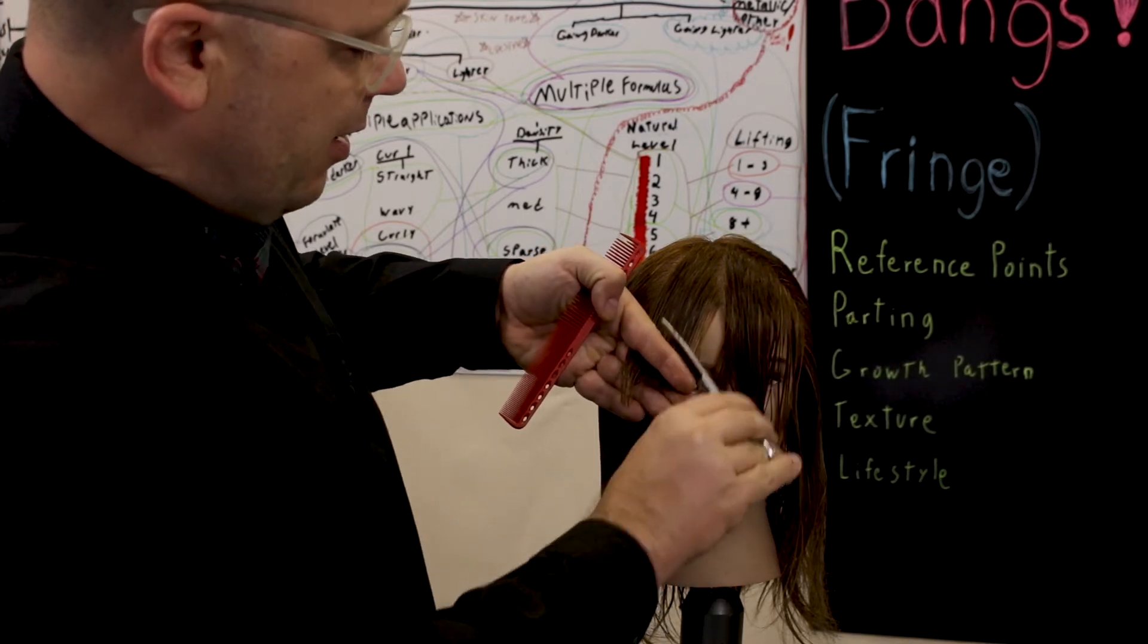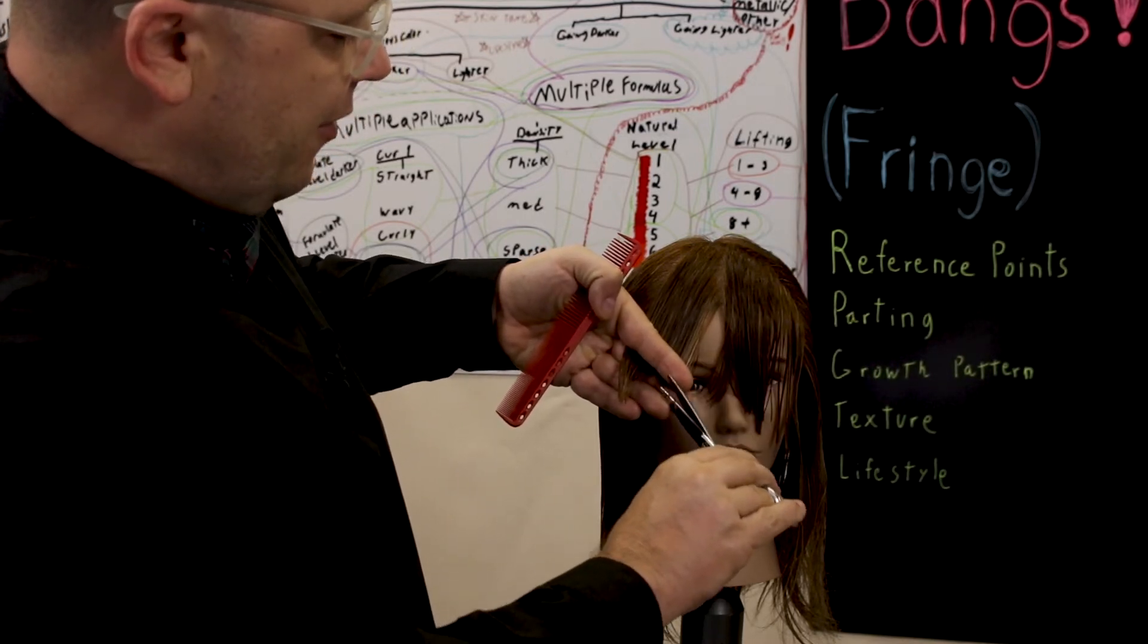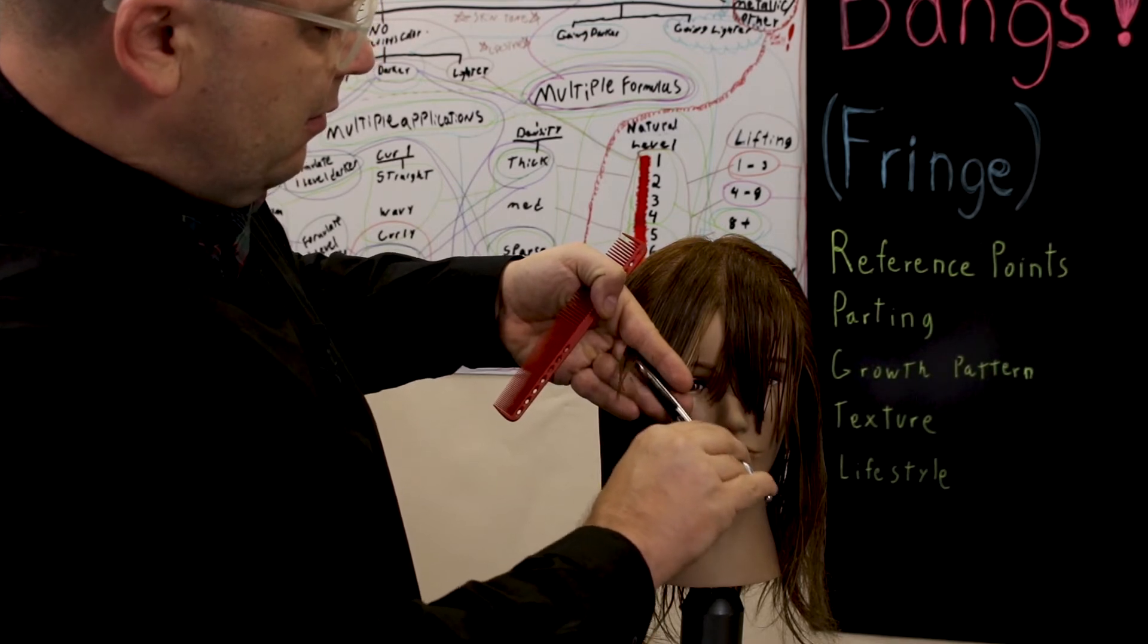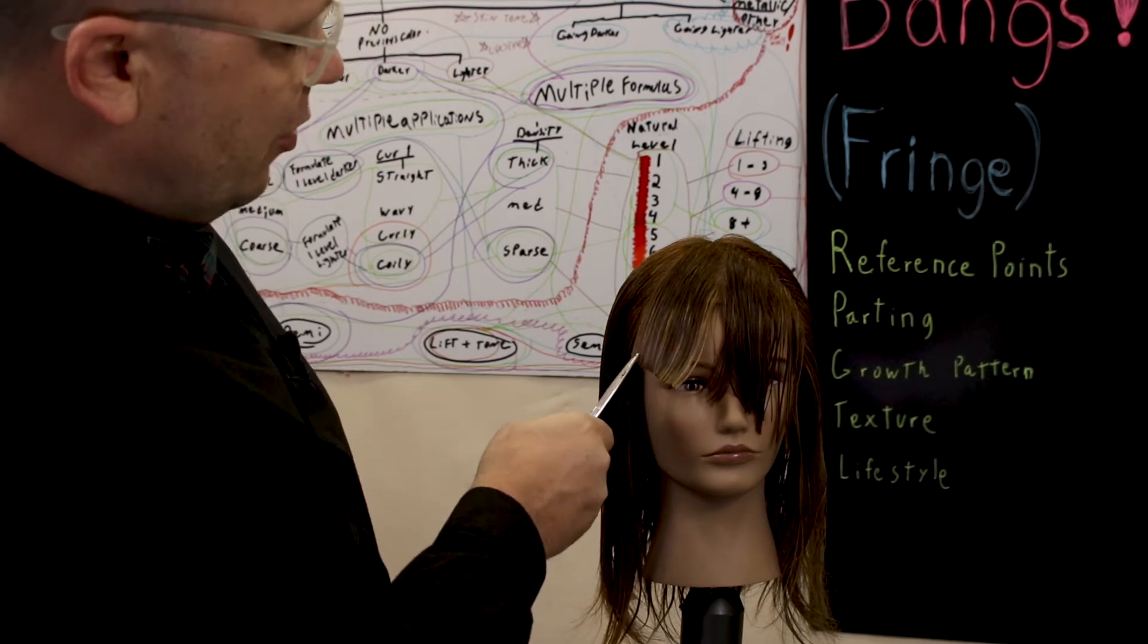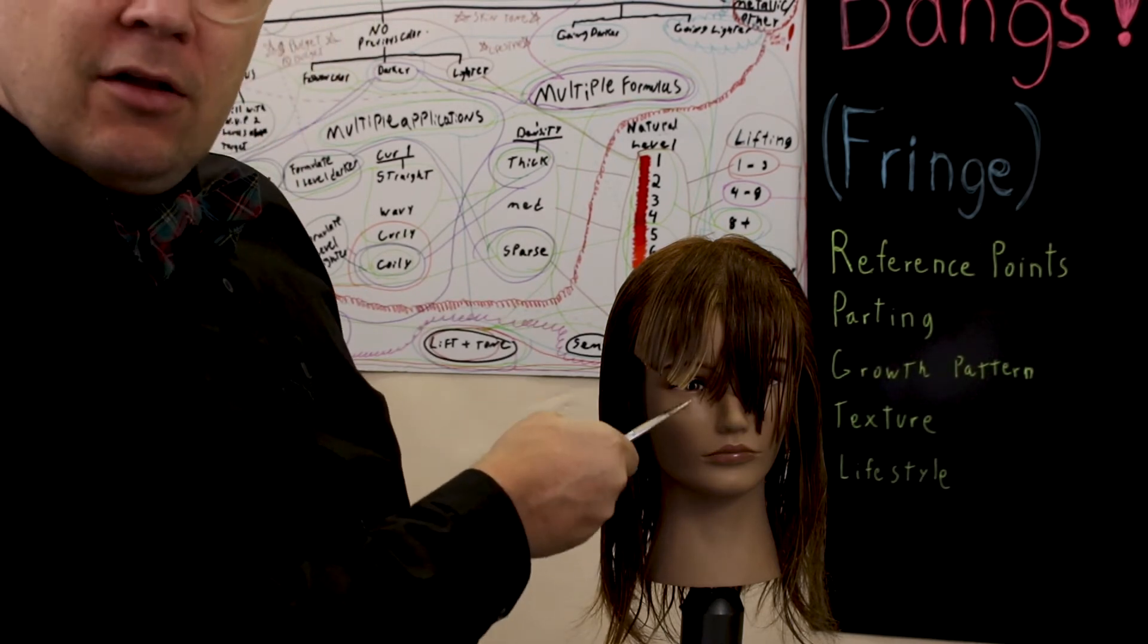Keep my fingers parallel with the part on the right. This would be my longest section. Fingers parallel with that. And take off all that excess length. Leaving me shortest on the side, longest in the center.